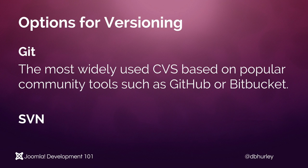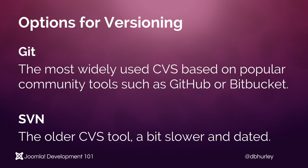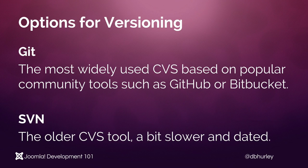The other option we're going to look at is SVN, or subversion, which is the older CVS tool. It's a bit slower and also a little bit dated. SVN originated earlier than Git, but SVN tends to have some quirks, a larger footprint in the file size, and is a little slower for updating and maintaining than the more popular Git.